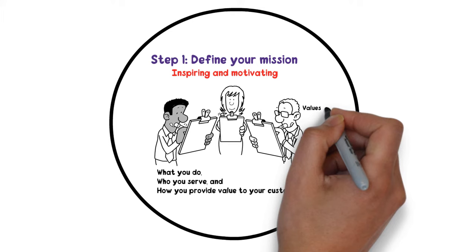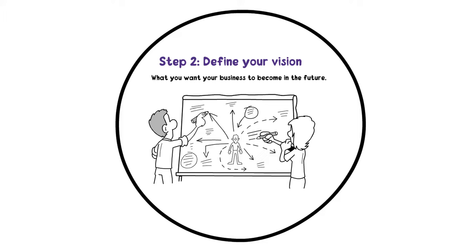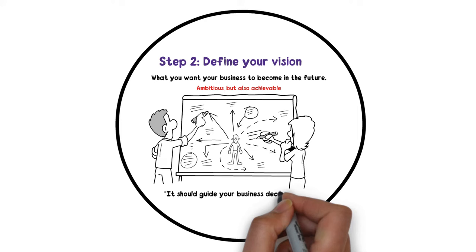Step 2: Define your vision. Your vision statement is a statement of what you want your business to become in the future. It should describe your long-term goals and aspirations, and it should be aspirational and inspirational. Your vision statement should be ambitious, but also achievable. It should guide your business decisions and help you stay focused on your ultimate goals.